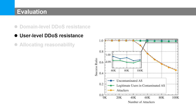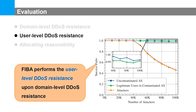We evaluate user-level DDoS resistance by comparing the success ratios of legitimate users and attackers. Only the success ratios of attackers are decreasing. The dashed line indicates the success ratio of legitimate users from contaminated ASes in a simple per-client file-sharing scheme, where legitimate users are influenced by attackers. However, FEBA is not influenced. FEBA's hierarchical channels provide independent channels for benign users in contaminated ASes, confining the attacking effects to the low-priority channel. Thus, FEBA performs user-level DDoS resistance beyond domain-level DDoS resistance.